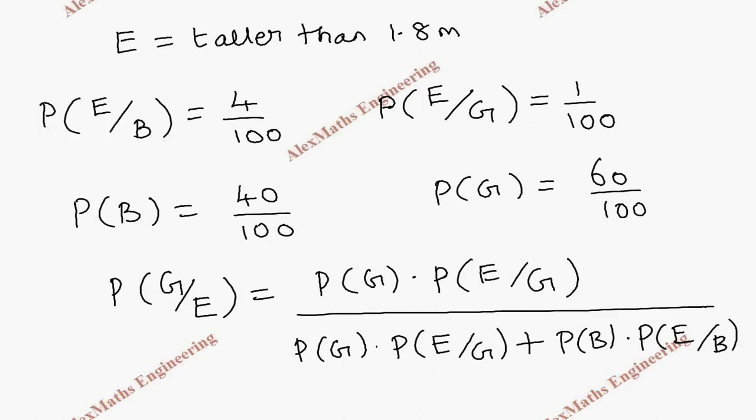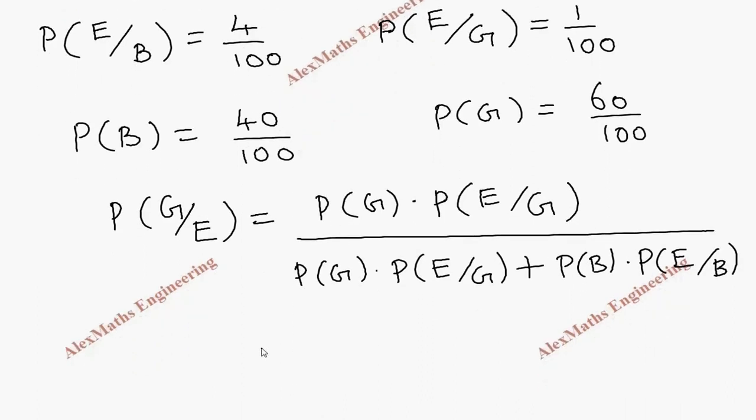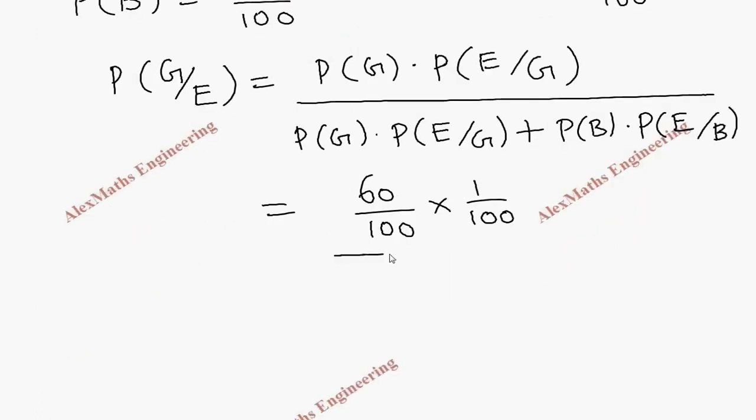Now, we substitute all the values. P of G is 60 by 100. And P of E by G is 1 by 100. Now, again, this is whole divided by...